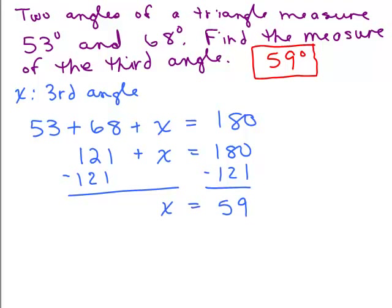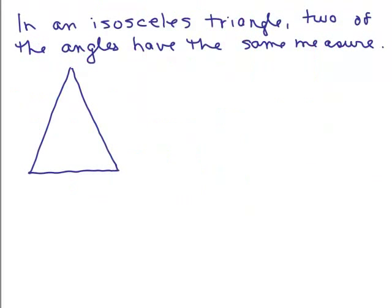And let's go ahead and check it. We've got 53, 68 and 59. Let's add them up. So 3, 8 and 9, that's 20, right? Put down the 2. And then we've got 7, 11, 180. That's up to 180 degrees. Cool. So 59 degrees was the correct answer.